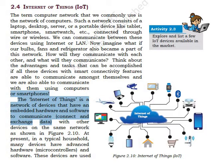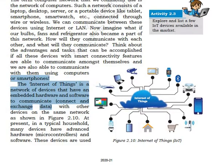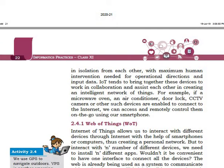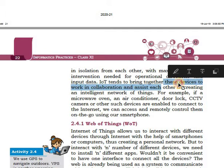Simply, what is IoT? Internet of Things is a new technology, a new era, that allows computing devices to transfer data over the network like the Internet, without requiring human-to-human or human-to-computer interaction. Just like we have shown here, using an Internet connection, we can connect all devices with other devices and control them through our mobile phone or other digital devices. IoT tends to bring together these devices to work in collaboration and assist each other in creating an intelligent network of things.